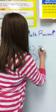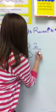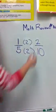1 times 2 is 2. 5 times 2 is 10. Okay, I get 2 tenths.